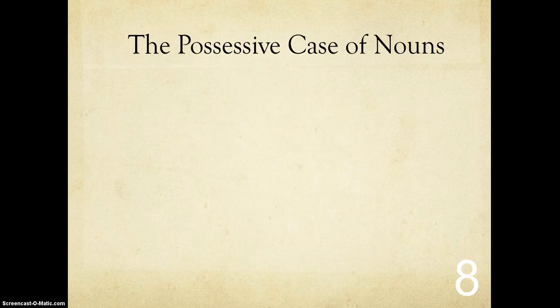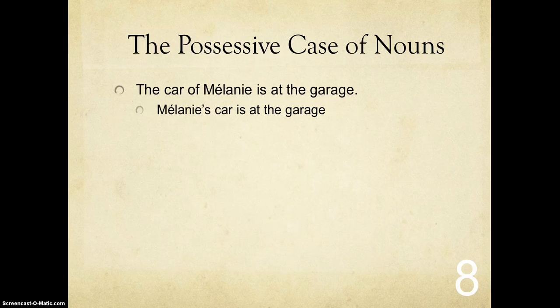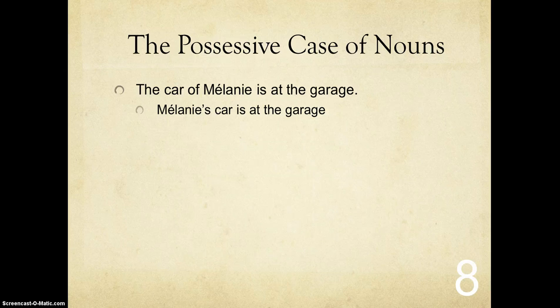The possessive case of nouns is when somebody owns something. So instead of the car of Melanie is at the garage, in English I say Melanie's car is at the garage. I do not say the Melanie's car. So I just add an apostrophe S to the word Melanie.